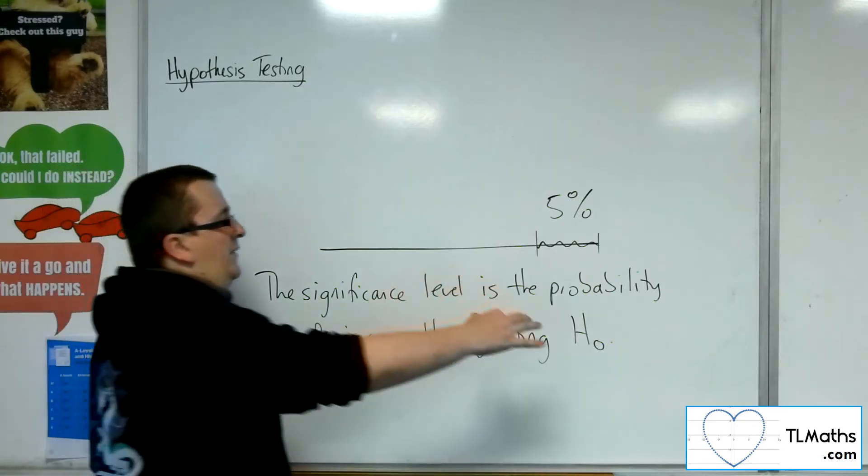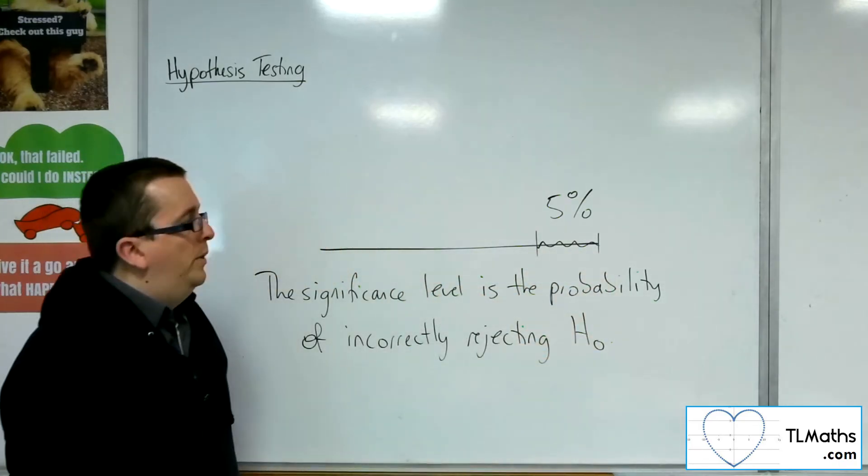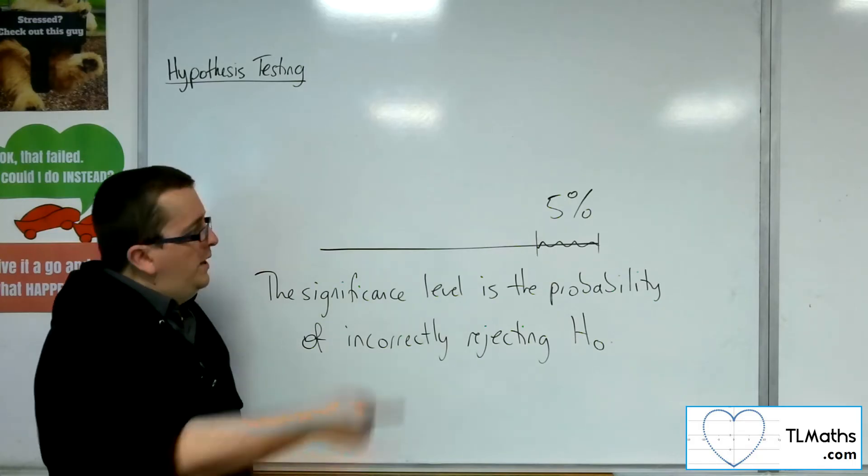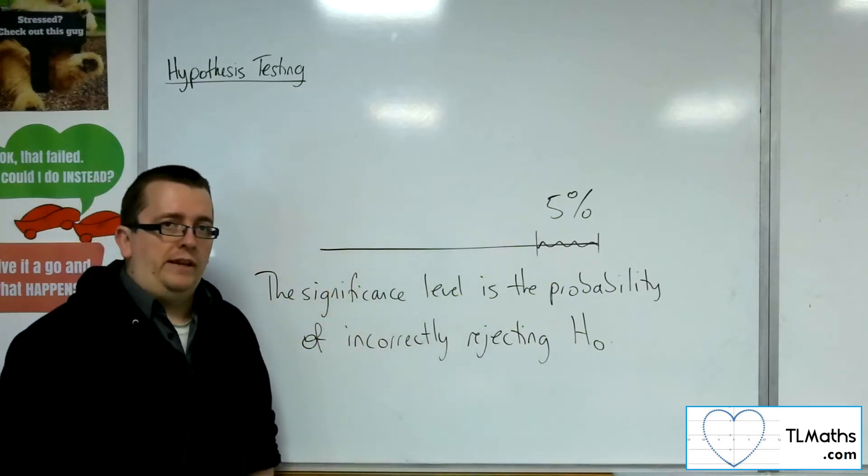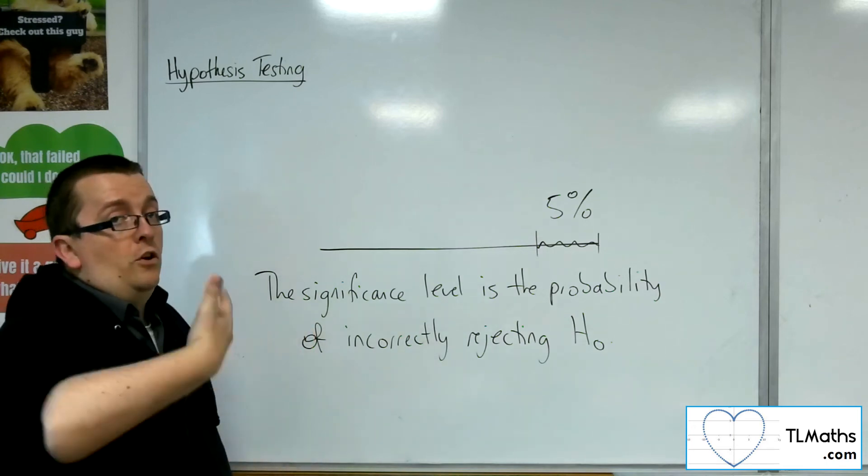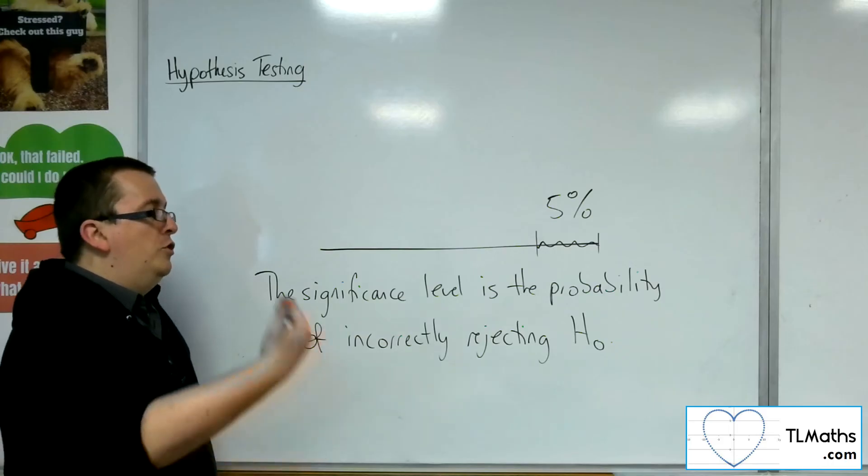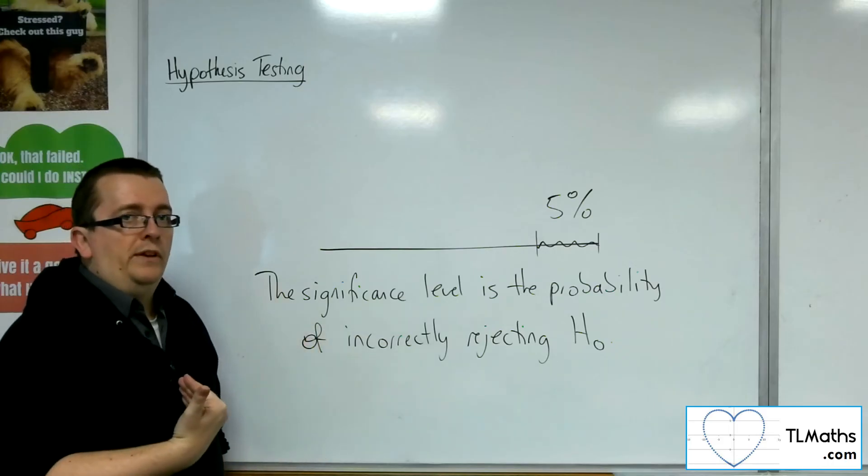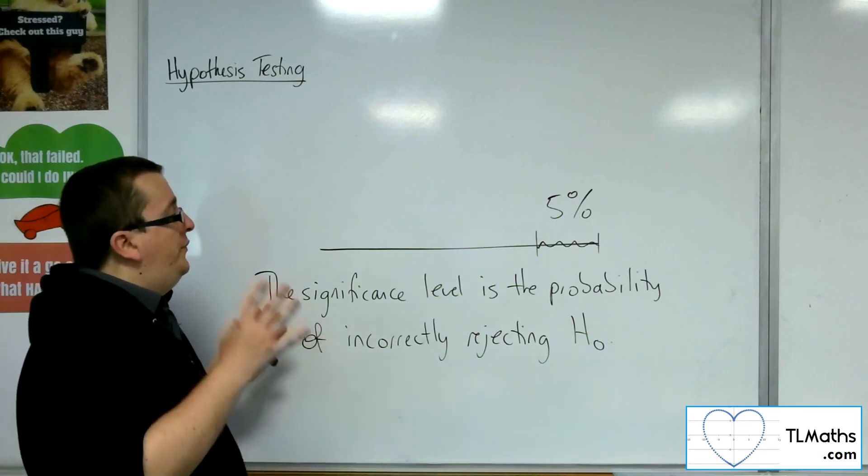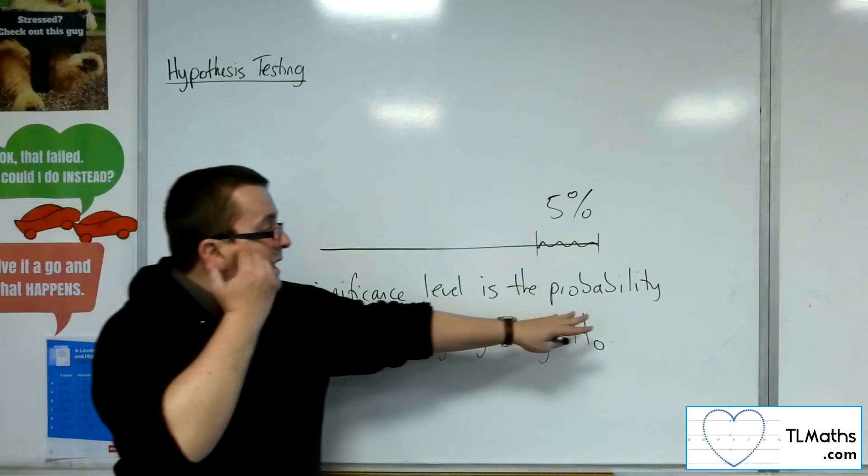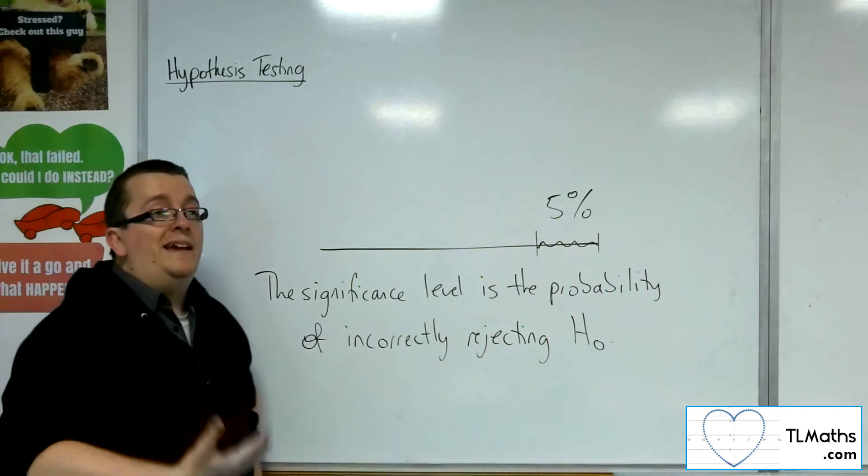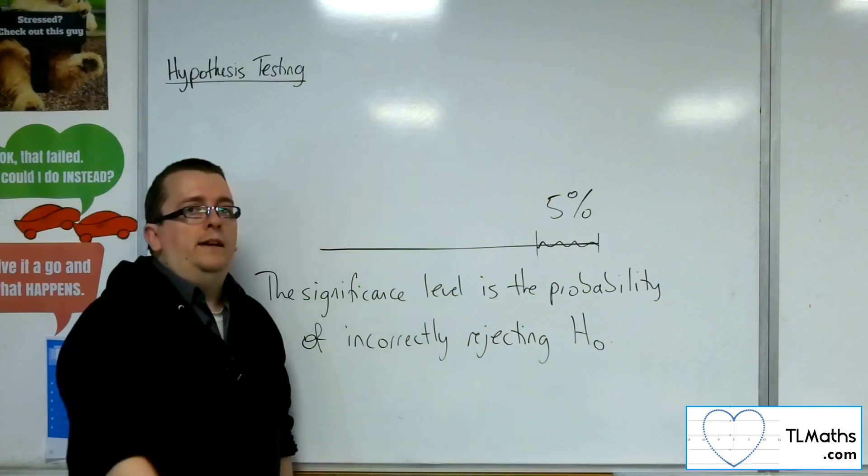So, you've set this significance level up so that you would say that extreme values will call them extreme if they appear in that significance level. And so, if you collected that data and you found actually you got a significant result and you could reject the null hypothesis, the null hypothesis could still be true. So, what you've done is you've set a significance level that is the probability of incorrectly rejecting H0 or the probability of rejecting H0 when in fact it is true.